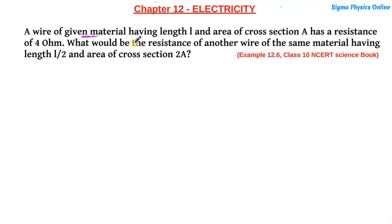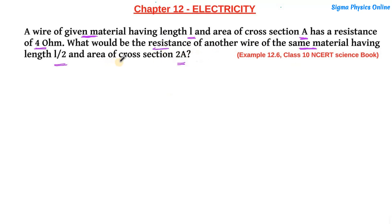Let's understand this question. First, we have a wire made up of a certain material with length l and area of cross section a. We have another wire of the same material, but the length of the second wire is l/2 — that is, half of the previous wire — and the area of cross section of the new wire is double that of the previous wire. We have to find out how the resistance changes when its length is halved and area of cross section is doubled.